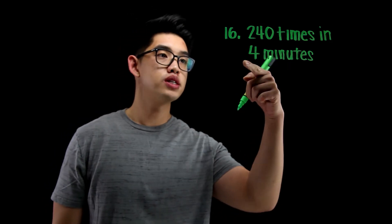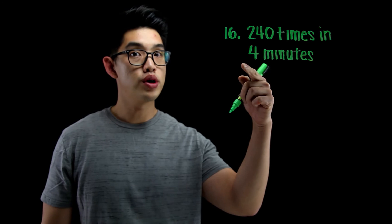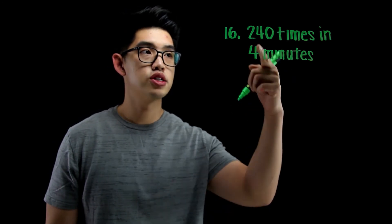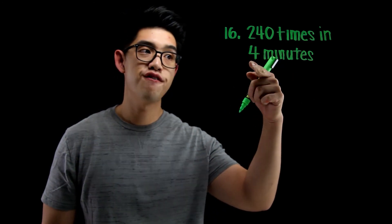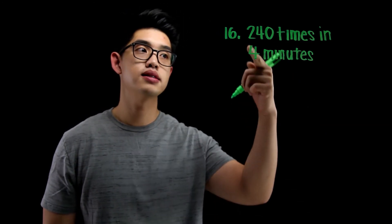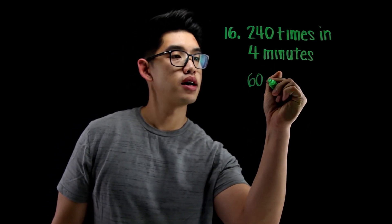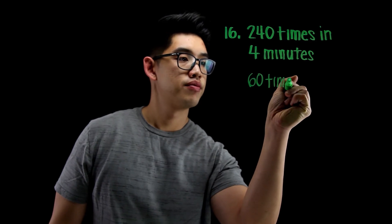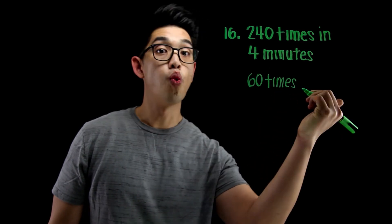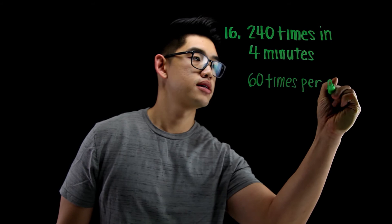240 divided by 4. I know that 4 times 6 is 24, so I know that 4 times 60 has to equal 240. So I'm going to write 60 times in 1 minute, or per minute.